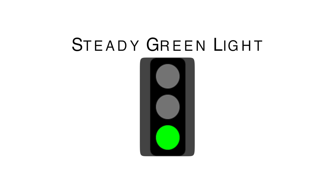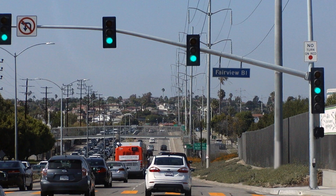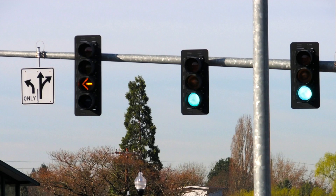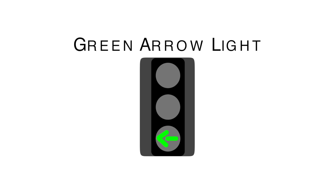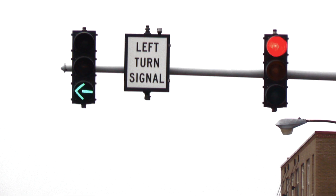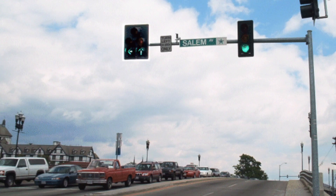Steady green: A green signal means all movements — straight ahead, left or right turns — are permitted, unless prohibited by a sign. Green arrow: A steady green arrow means you have the right of way and may make the movement indicated by the arrow.